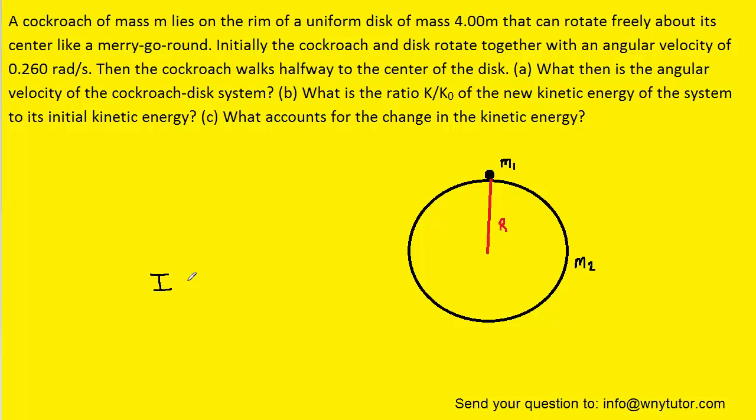Notice that for the cockroach, the rotational inertia is going to equal M times capital R squared. And that's because for any particle-like object, we use this expression to represent the rotational inertia. For the disk, it's almost the same expression, except we have to insert a factor of one-half into the equation. So that would be the rotational inertia of the disk.